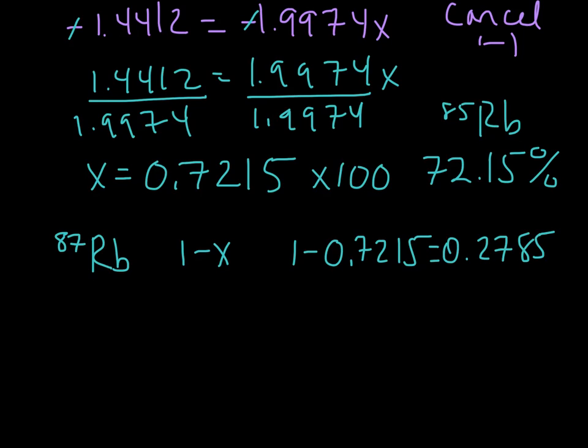And then again, if we multiply this guy by 100 to get a percentage, then that's going to be 27.85%. And the reason why we can do this, why we can call one of them x, and one of them 1 minus x, is because there are only two of them, we know that it has to add up to 100%. So we can assign one as x, and then the other one is basically just the leftover, and that's this 1 minus x.